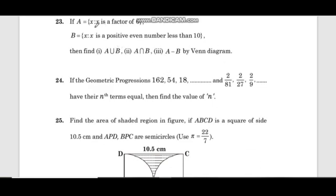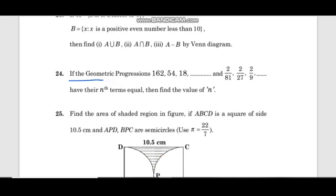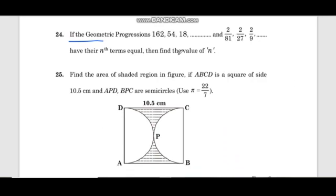If A is the set of x such that x is the factor of 6, and B is the set of x such that x is a positive even number less than 10, then find A union B, A intersection B, and A minus B by Venn diagram. In the geometric progression 162, 54, 18 and 2 by 81, 2 by 27, 2 by 9, if their nth terms are equal, then find the value of n.